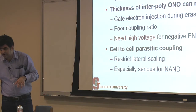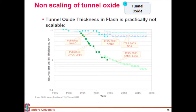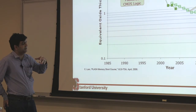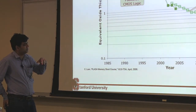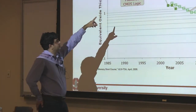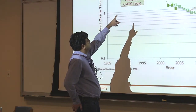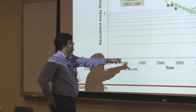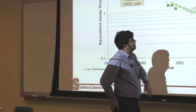This slide shows equivalent oxide thickness across different years. We talked about making logic transistors and FinFET transistors — the green line is for logic transistors. You can see it scaled from 10 nanometers in 1995 to less than a nanometer in 2010, because we wanted to shrink our gate length and keep the same electrostatics. But look at what's happened in the NAND arena — NAND transistors had a tunnel oxide thickness of essentially 10 nanometers in 1990, 8 nanometers in 2010, and it is still 8 nanometers.